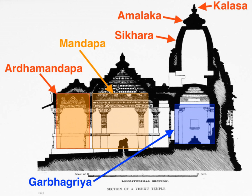A Hindu temple is a symmetry-driven structure, with many variations, on a square grid of padas, depicting perfect geometric shapes such as circles and squares. Susan Lewandowski states that the underlying principle in a Hindu temple is built around the belief that all things are one and everything is connected. A temple replicates again and again the Hindu beliefs in the parts mirroring, and at the same time being, the universal whole. Like an organism of repeating cells, the pilgrim is welcomed through mathematically structured spaces, a network of art, pillars with carvings and statues that display and celebrate the four important and necessary principles of human life: the pursuit of artha, kama, dharma, and moksha.